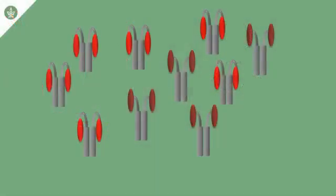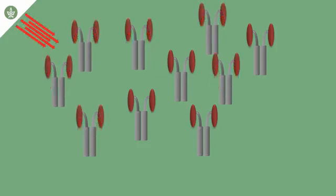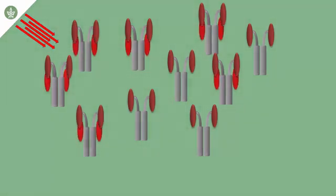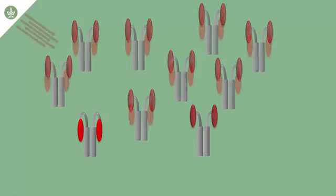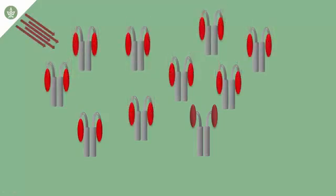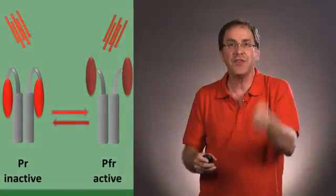So again, we have the first form which is called PR. PR is inactive. When PR absorbs the red light it changes its structure, it now becomes PFR and PFR is the active form of phytochrome. This would be the form that would be activating flowering in a long day plant. When PFR absorbs the far red light it changes its structure back to PR and it gets turned off.